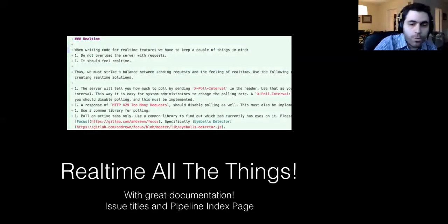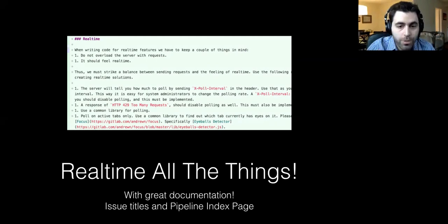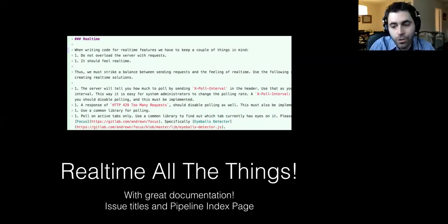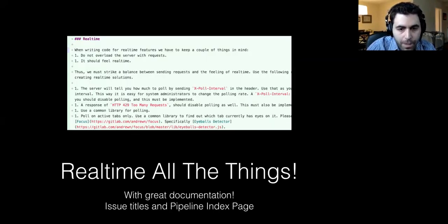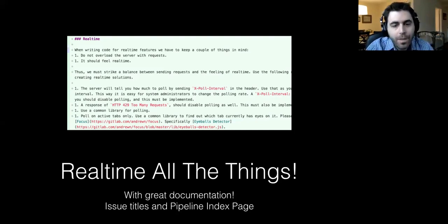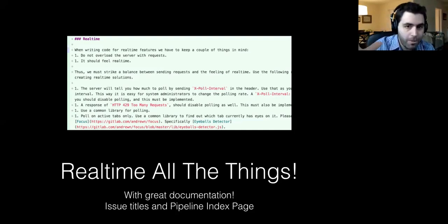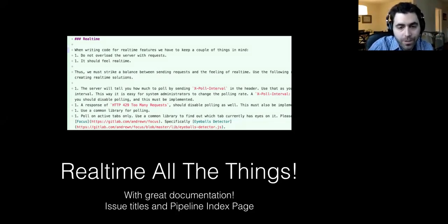In line with this, we're going to real-time all the things. We have some documentation on how we're going to do that. The first thing we're starting with is the title of the issues, then the description of the issues. The issue titles and the pipeline index page are going to be real-time. We're working with the backend team — with Sean and everybody else — to make sure that we're not killing the server when we do this.